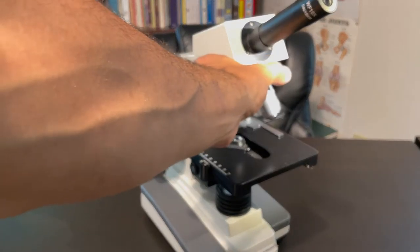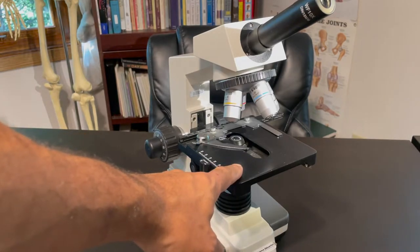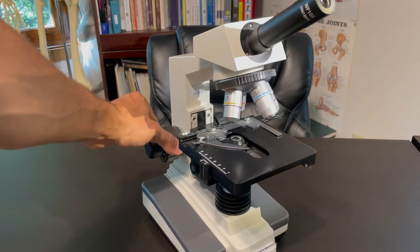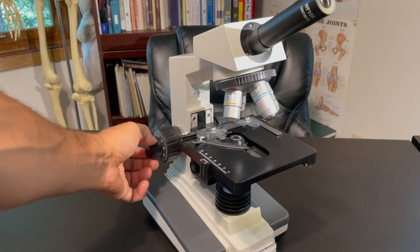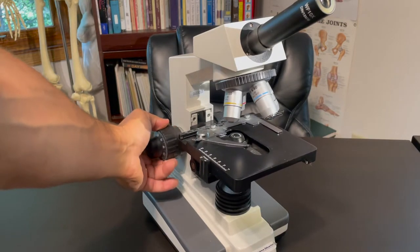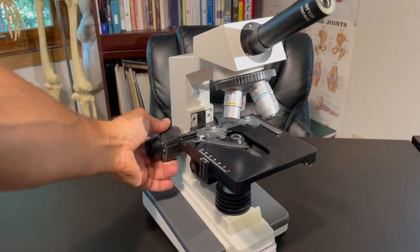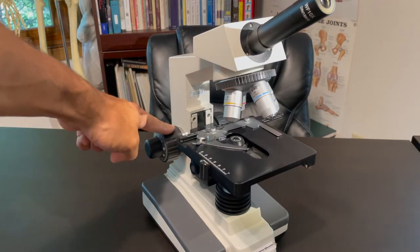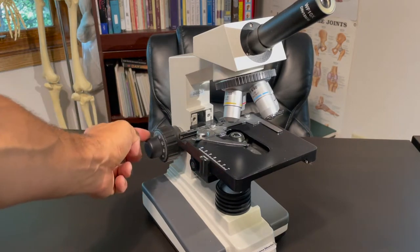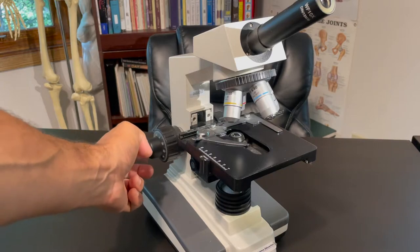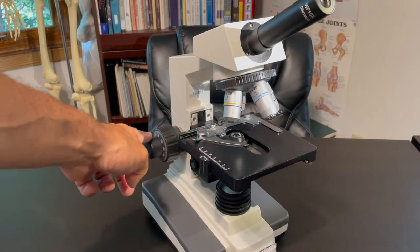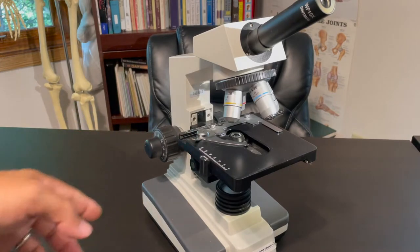We also have the stage right here. You have the coarse adjustment knob. That's this large one here. And you have the fine adjustment knob. If you spin even just a quarter of a turn, you can see how fast the stage moves up and down. That's using the coarse. You see that. However, you spin the fine adjustment knob and you don't really see, at least with the naked eye, the stage moving, although it is moving up and down. That's because it's a fine adjustment.